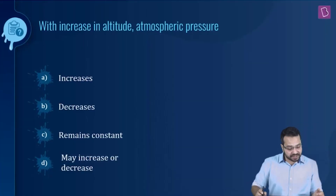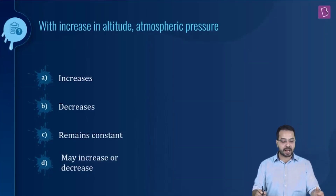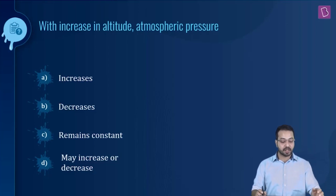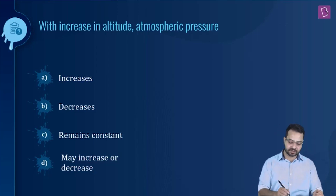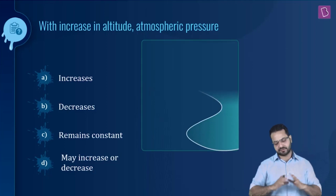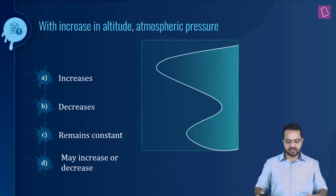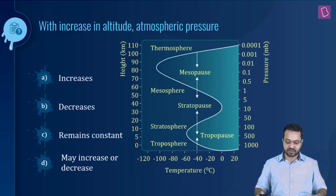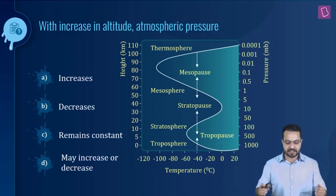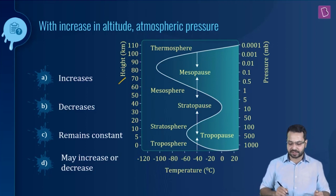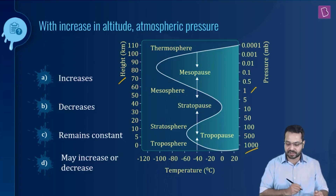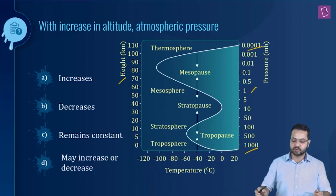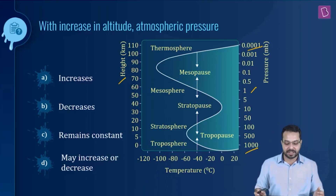The question is: with increase in altitude, atmospheric pressure increases, decreases, remains constant, or may increase or decrease? We have a chart showing the variation of pressure with height, and we can easily see that with height increasing, the pressure is decreasing — it starts at 1000 millibar and goes to 0.001 millibar.